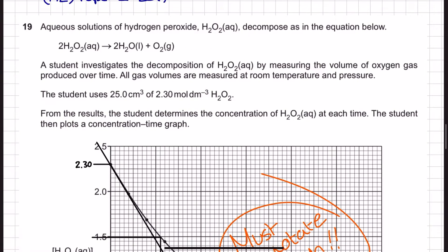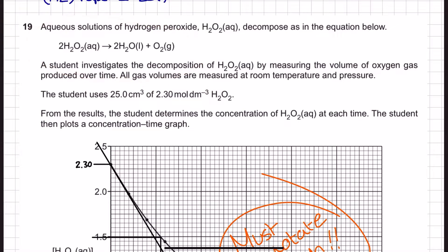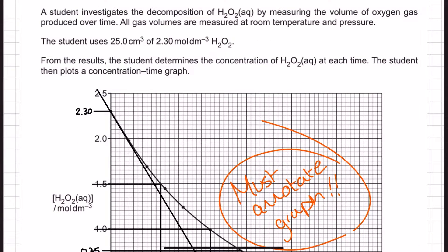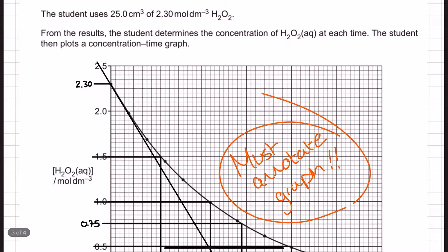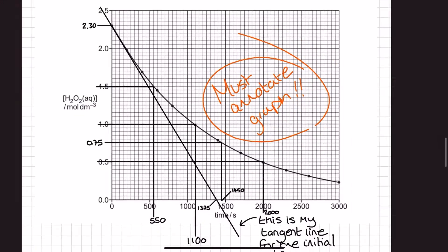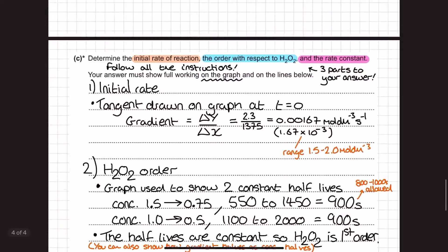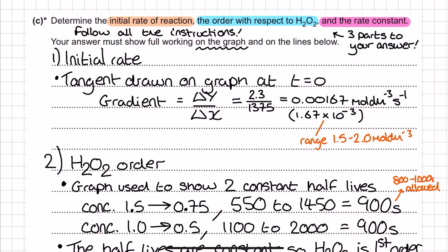The question introduces itself here by saying that aqueous solutions of hydrogen peroxide decompose according to this equation just here. You may have actually done this as a practical. A student investigates the decomposition of hydrogen peroxide by measuring the volume of oxygen gas produced over time. The student uses 25 cm³ of 2.3 mol/dm³ H2O2, and from the results, the student determines the concentration of H2O2 at each time. The student then plots a concentration-time graph, which is what we had here, but I've added in on here a tangent and some other information, which is part of my answer. I'm going to explain everything I've put here as we go to the next part of this, where we gather the instructions for the level of response question.